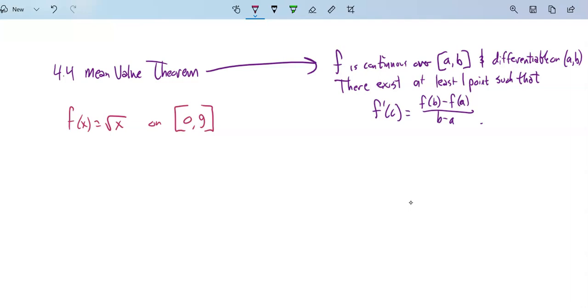So our function is f(x) = √x, and that happens on our interval [0, 9]. We've got our mean value theorem. We want to show that this satisfies the mean value theorem. We want to find where it happens. So we're going to need the derivative of this thing. So f'(x), that's x^(1/2), that's (1/2)x^(-1/2), which is 1/(2√x). So there's our derivative.